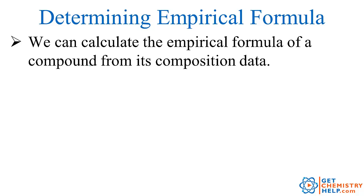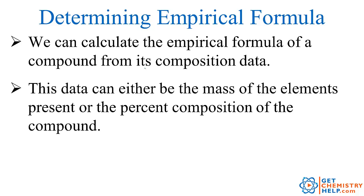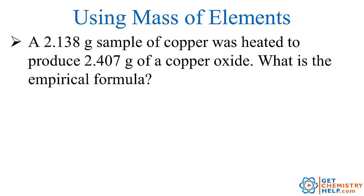There are two ways that we can determine the empirical formula of a compound. The first way is to use the data for just the pure mass of the elements that are present. The second way is to use percent composition data. Let me show you an example first using the mass of elements.